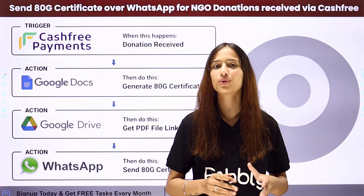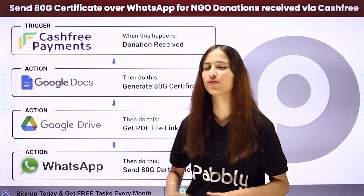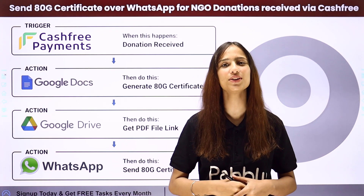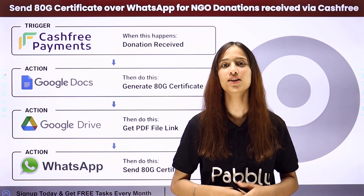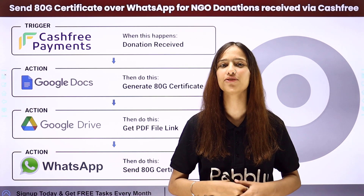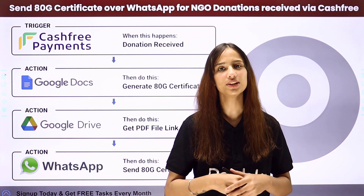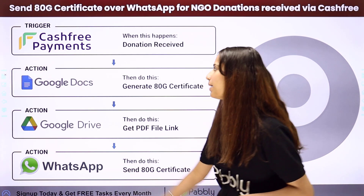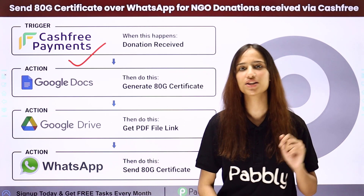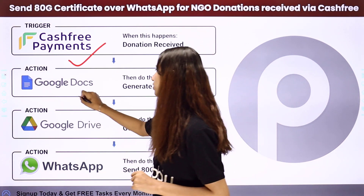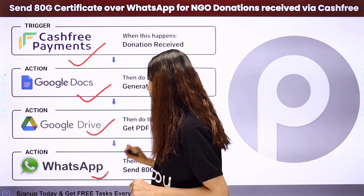To do this, I need to build a connection between these applications, for which I am going to use Pabbly Connect. Pabbly Connect follows the concept of trigger and action. My trigger application will be Cashfree Payments, and my action applications will be Google Docs, Google Drive, and WhatsApp Cloud API.